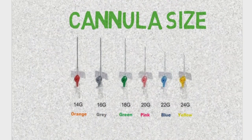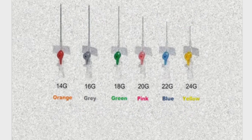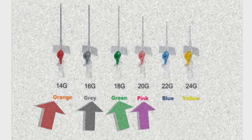Cannulas are of different gauge size and you can identify their gauge size using their color. For example, gauge 14 is orange in color, gauge 16 is gray in color, gauge 18 is green in color, gauge 20 is pink in color, gauge 22 is blue in color, and gauge 24 is yellow in color.